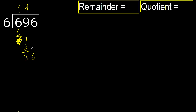Bring down 36. 6 multiplied by 7 is 42 — it's greater. Multiplied by 6 is 36. Subtract. Next.